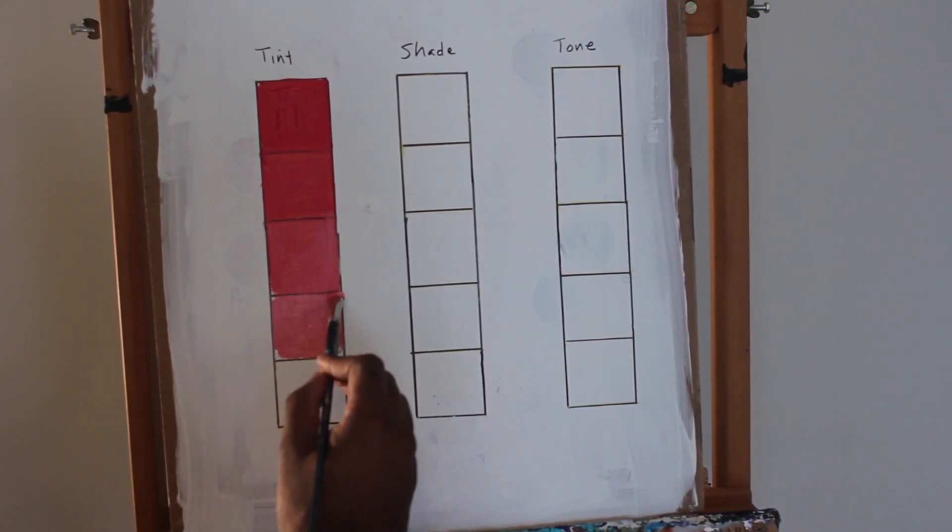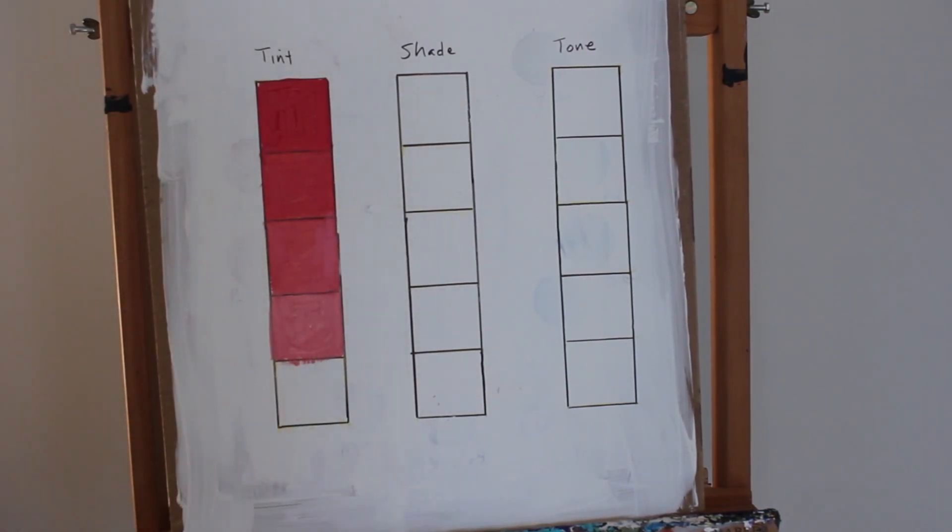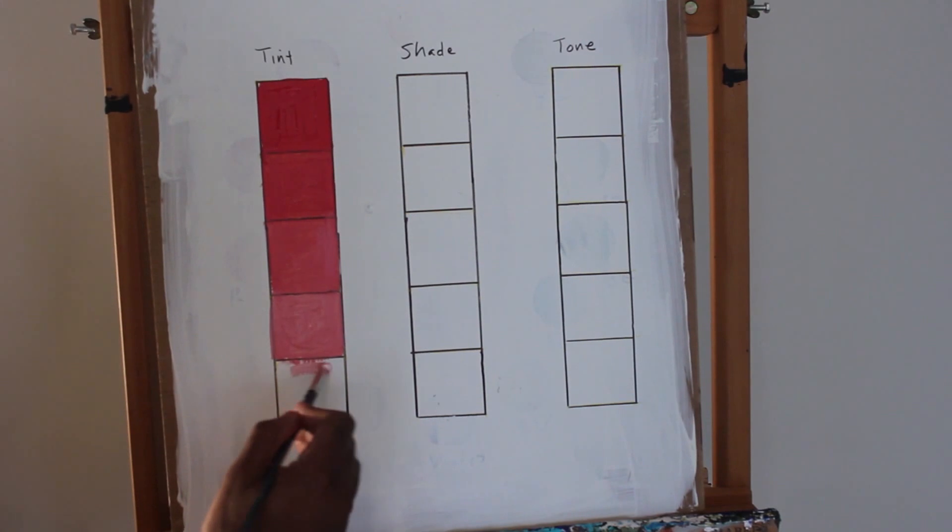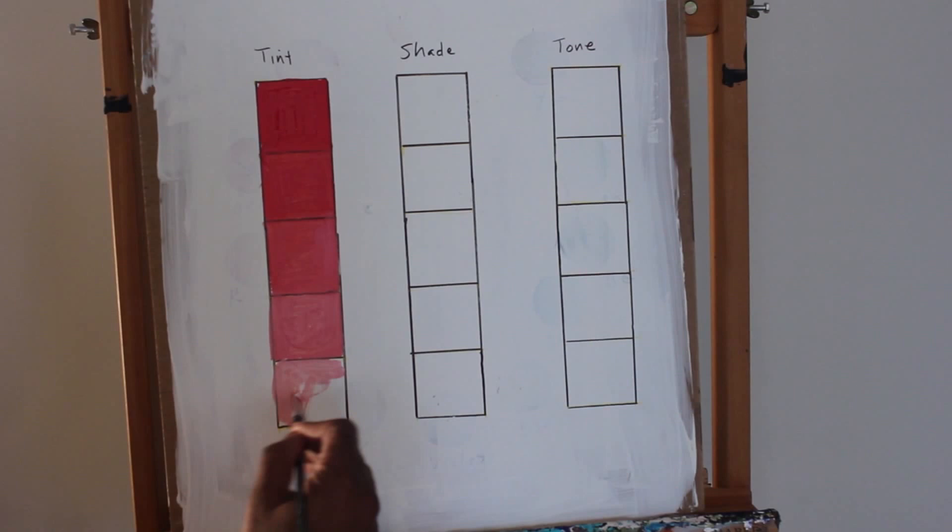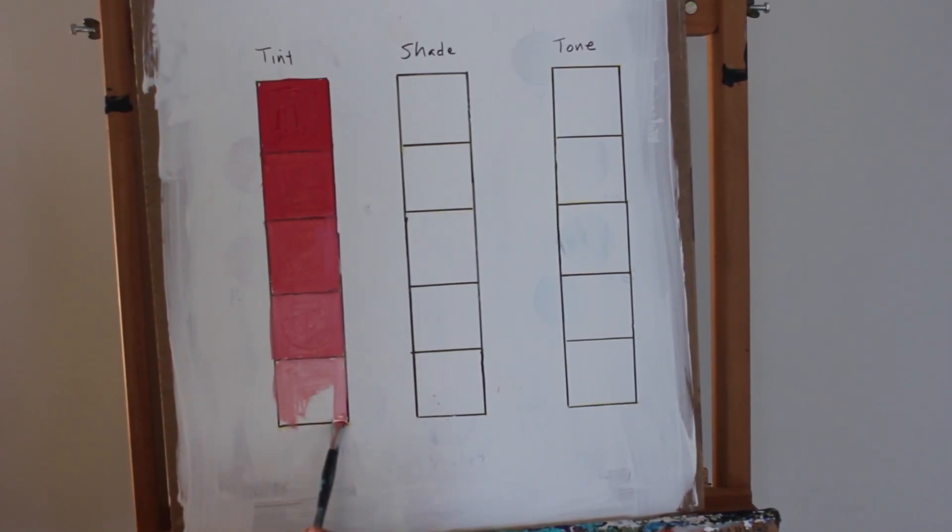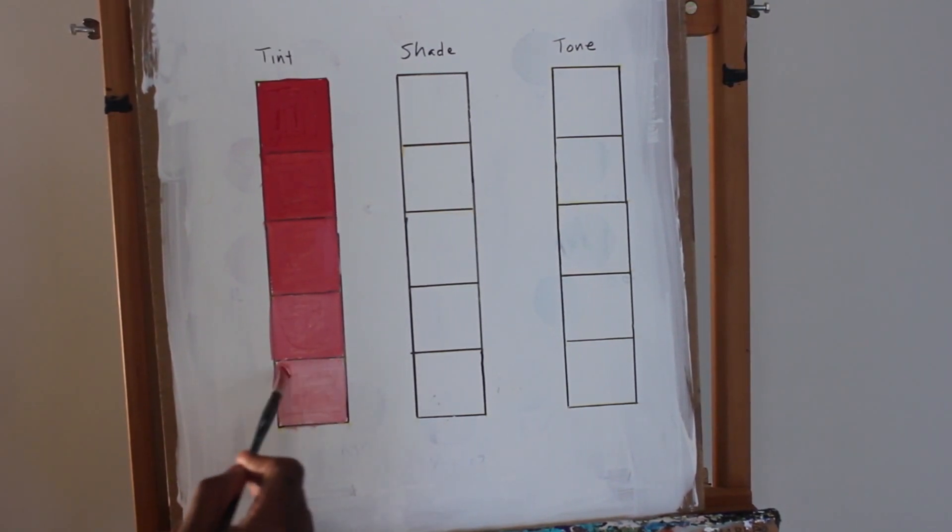Here I'm on my fourth square, so you can see it's a little bit lighter than my third square. Again, I'm trying to get the closest to white as possible, just a little hint of red in my last square. Pretty much pink. Most artists, or particularly anybody, will call this color pink.